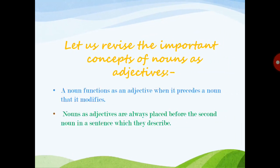Let's revise the important concepts of noun as adjective. First: a noun functions as an adjective when it precedes the noun that it modifies — when it qualifies the second noun and tells more about it. Second: nouns used as adjectives are always placed before the second noun in a sentence which they describe. When there are two nouns, the first noun placed just before the second noun is always acting as an adjective.